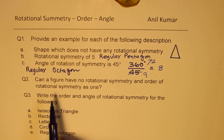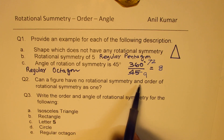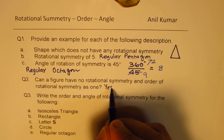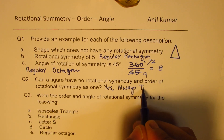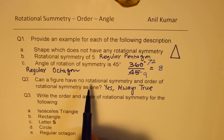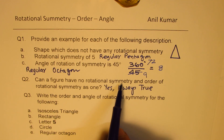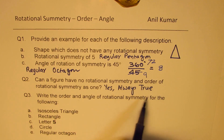Question number 2: can a figure have no rotational symmetry and an order of rotational symmetry of 1? Yes, this is always true. When we talk about whether a figure has rotational symmetry, we mean matching at an angle less than a full turn, less than 360 degrees. For measuring the order, we make a complete circle.